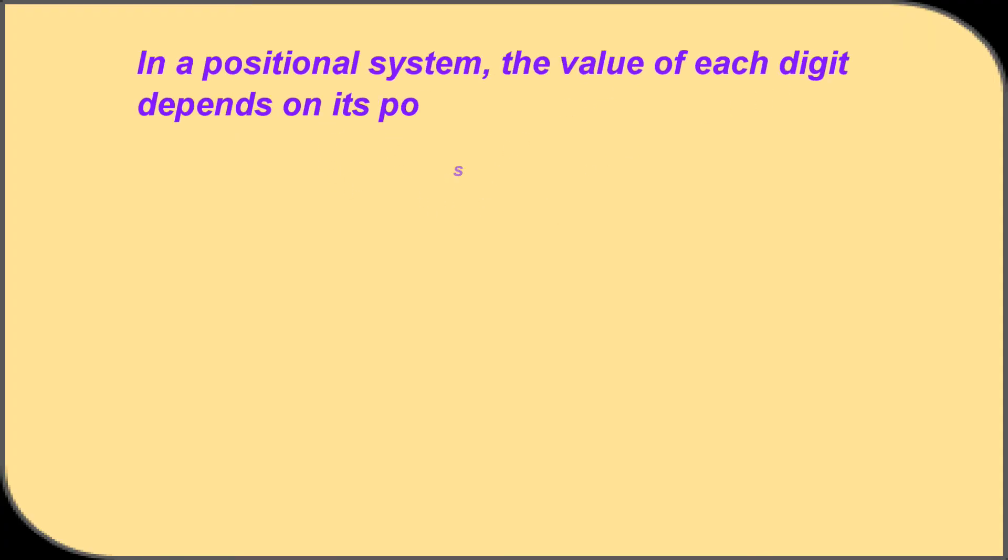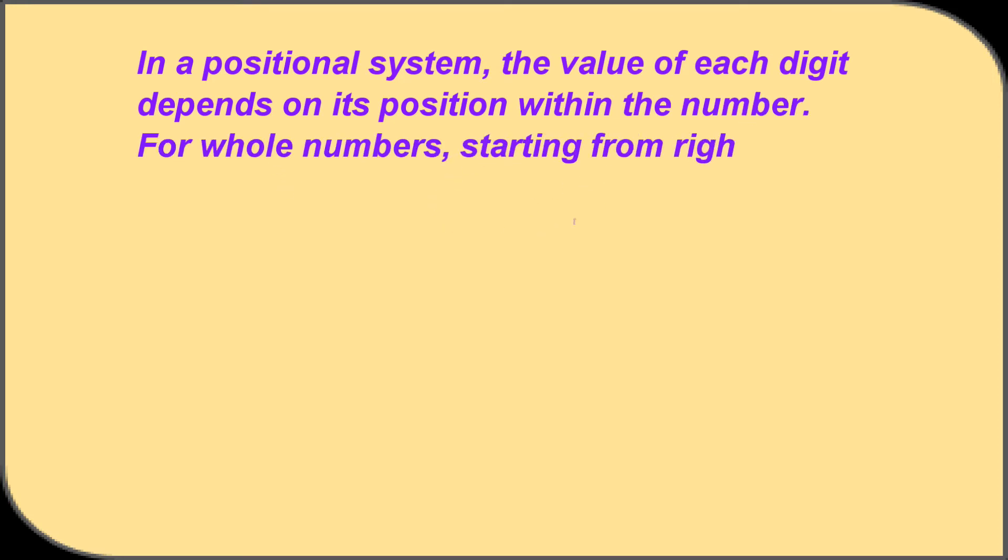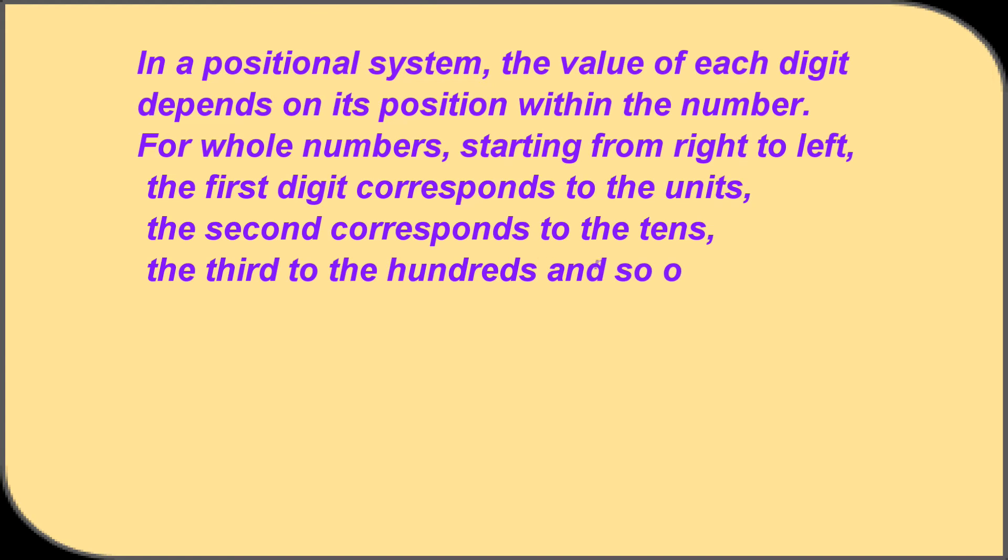In positional systems, the value of each digit depends on its position within the number. For whole numbers, starting from right to left, the first digit corresponds to the units, the second corresponds to the tens, the third to the hundreds, and so on. For example, 5876 equals 5000 + 800 + 70 + 6.